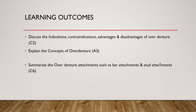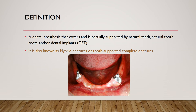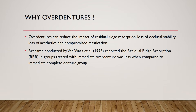Coming to the definition: according to the GPT — the Glossary of Prosthodontic Terms — an overdenture is a dental prosthesis that covers and is partially supported by natural teeth, tooth roots, or a dental implant. It is also known as a hybrid denture or tooth-supported complete denture. You can see a coping with a stud attachment on top.